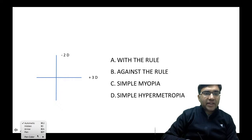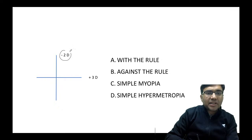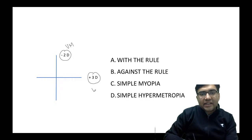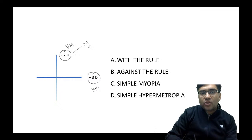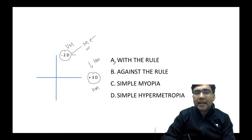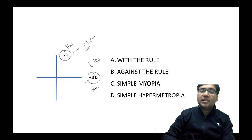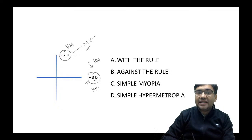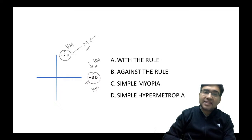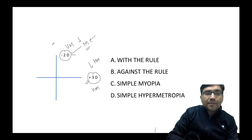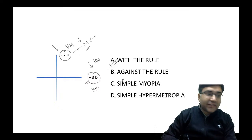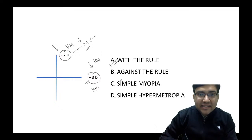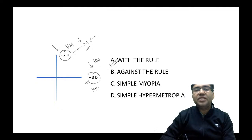Another example: minus 2 diopter in the vertical meridian and plus 3 diopter in the horizontal meridian. Minus 2 is myopic and plus 3 is hypermetropic. Even though numerically plus 3 is greater, you must always look at which meridian is more myopic. Because the vertical meridian is more myopic, this is also with-the-rule astigmatism. This is a mixed astigmatism, but if they ask about with-the-rule versus against-the-rule, this is with-the-rule.